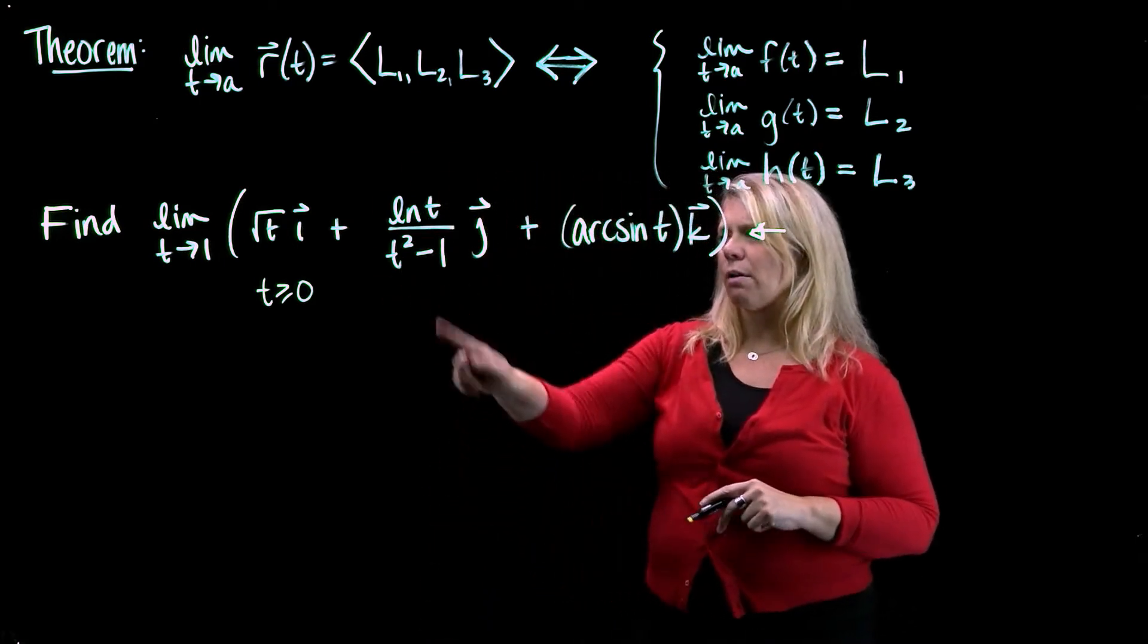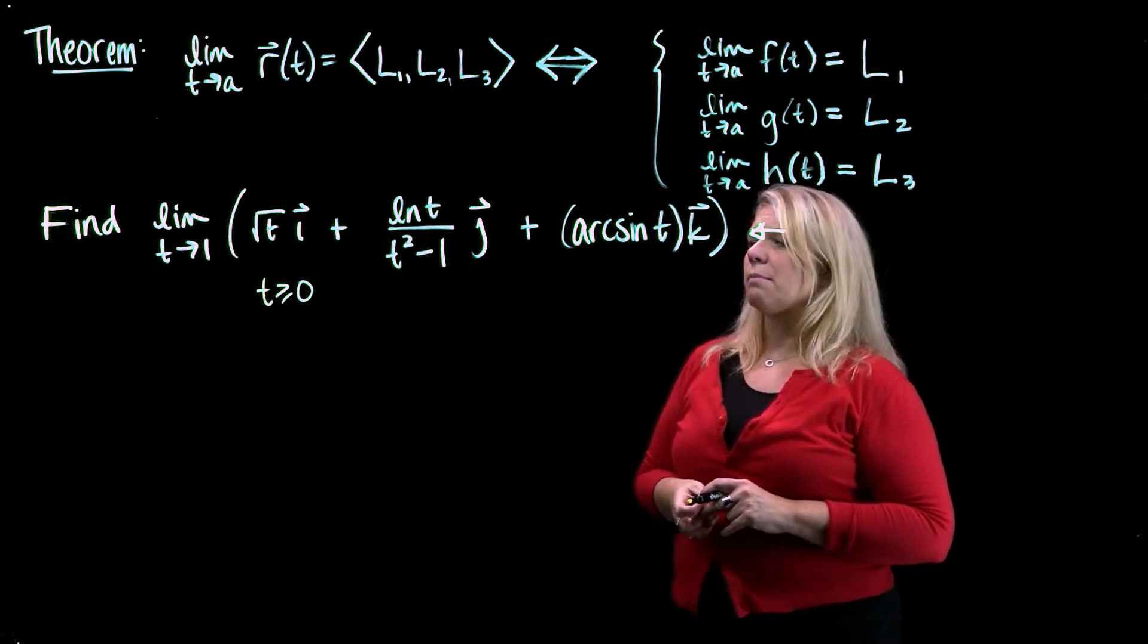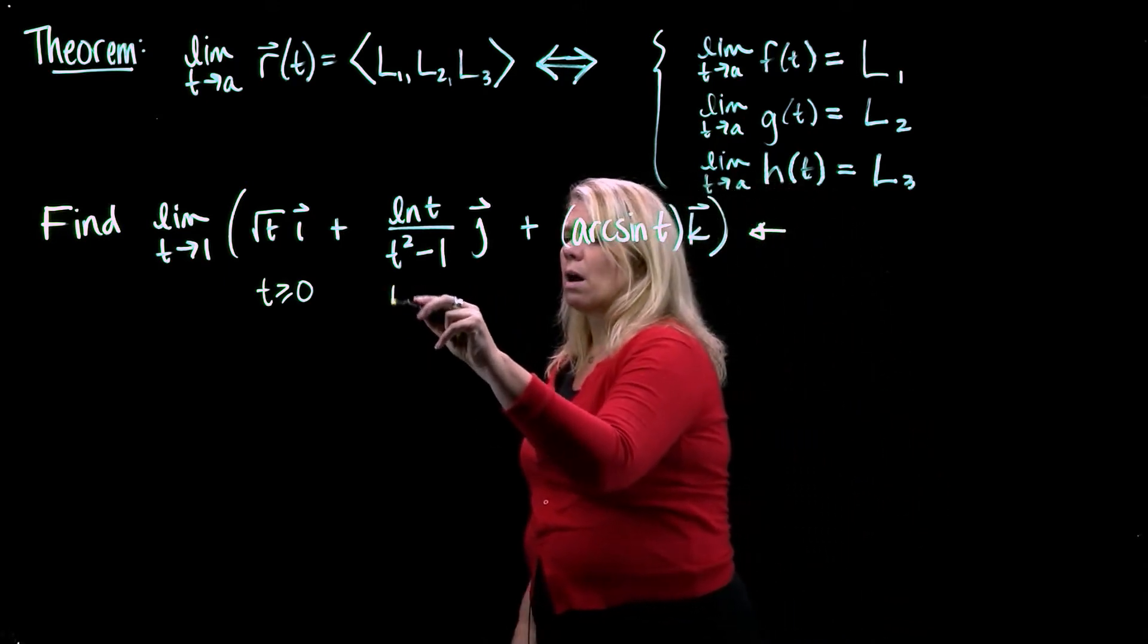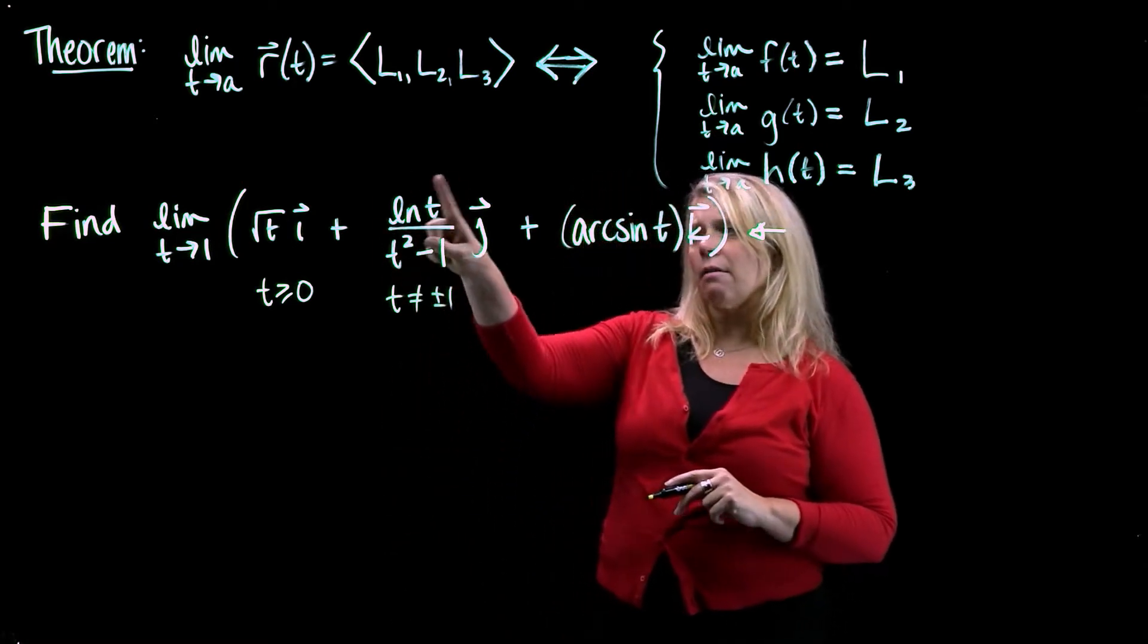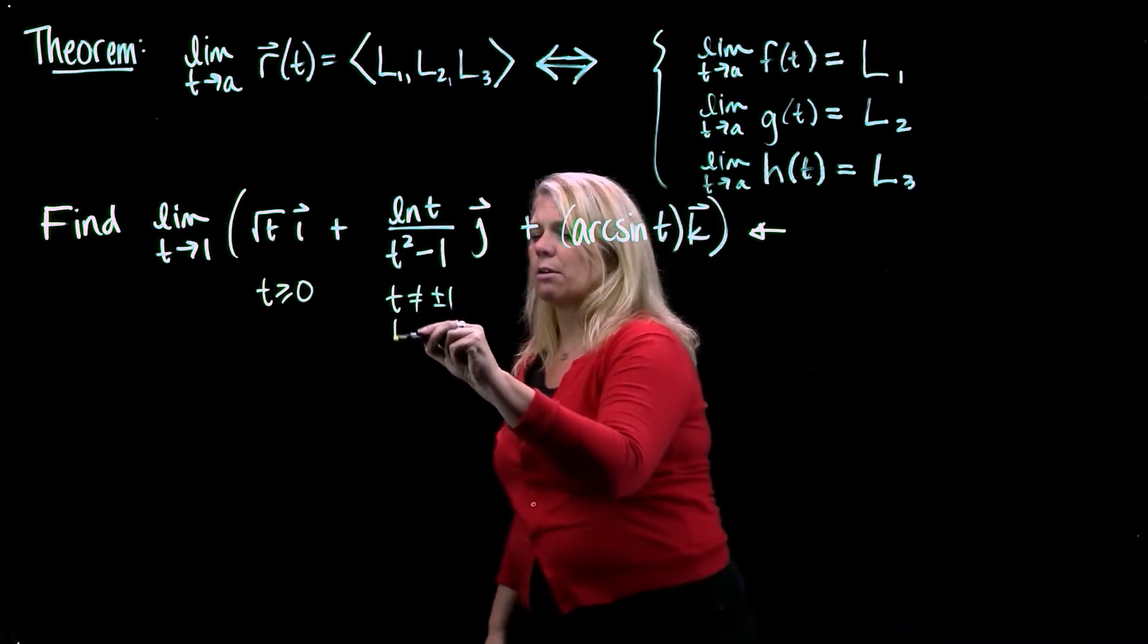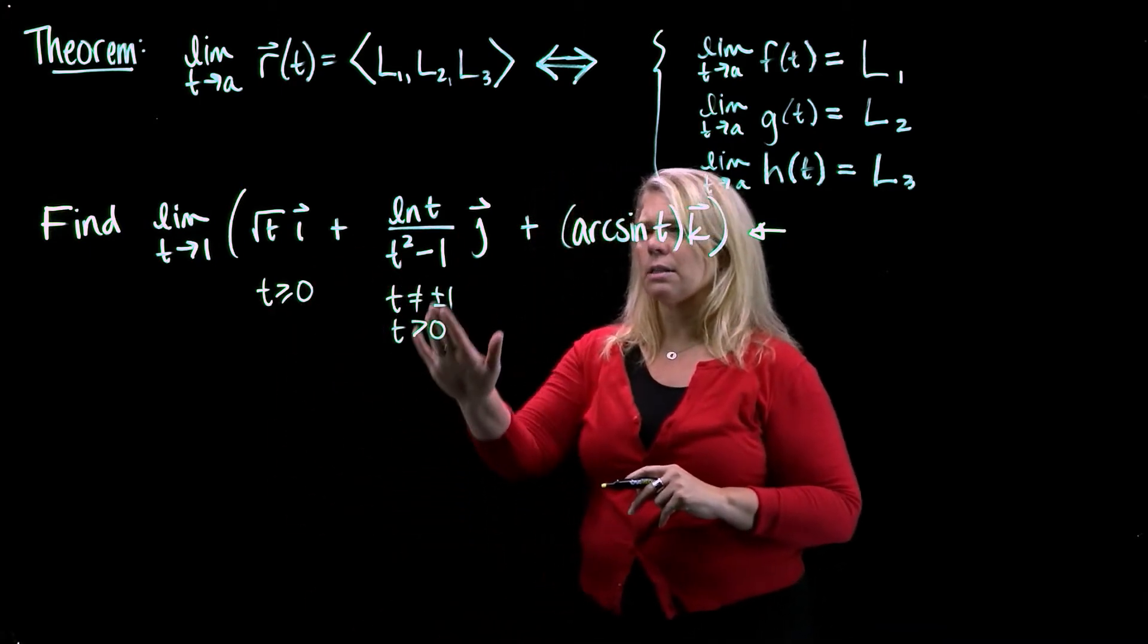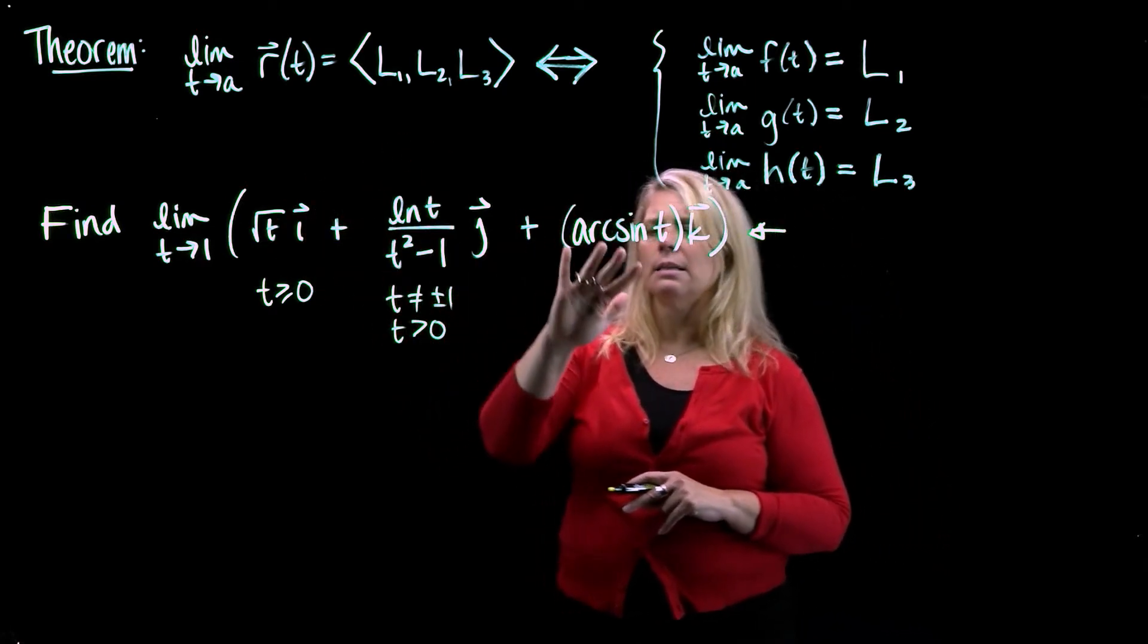The second component function has two things to think about. We've got a denominator that is sometimes 0, so t could not be 1 or negative 1. And the logarithm function also has some restrictions. That's going to force t to be greater than 0. So I'm just writing down some scratch work, thinking about the restrictions from the different pieces that I see here.